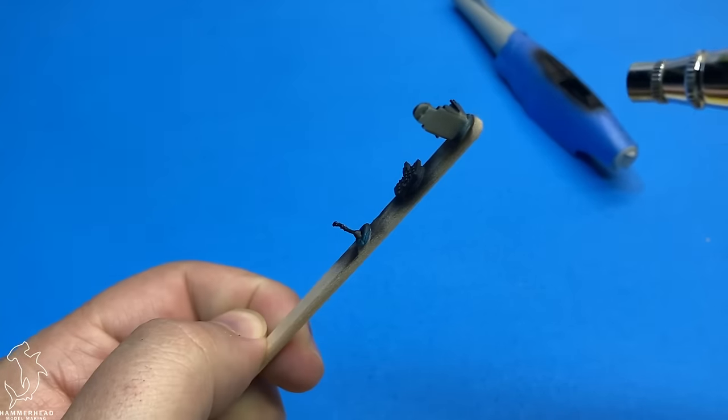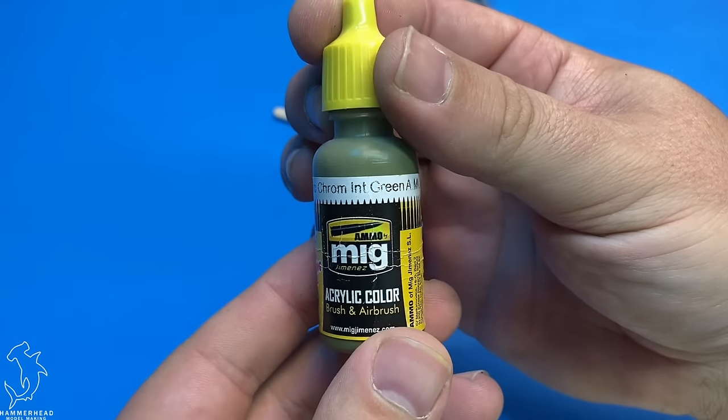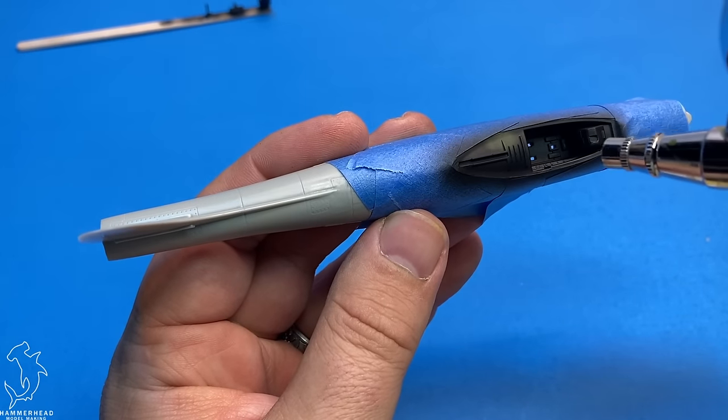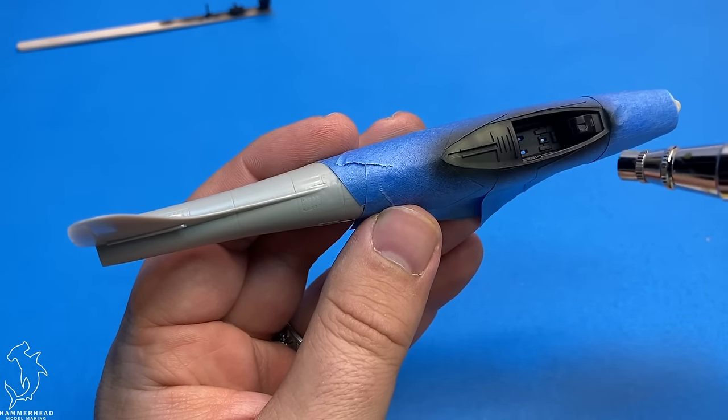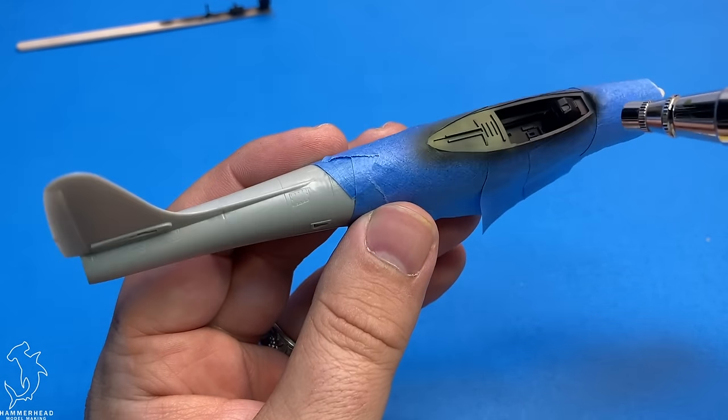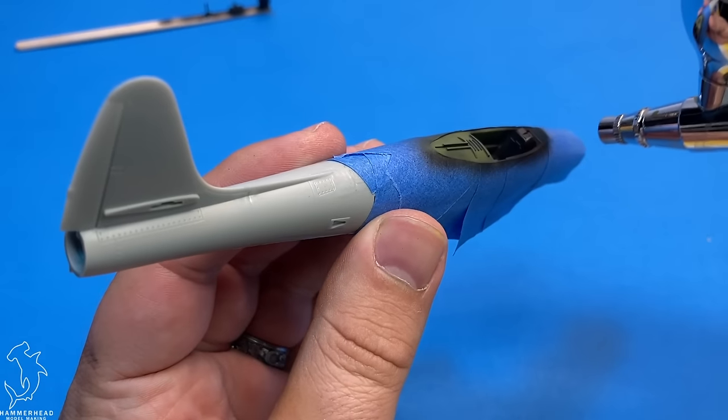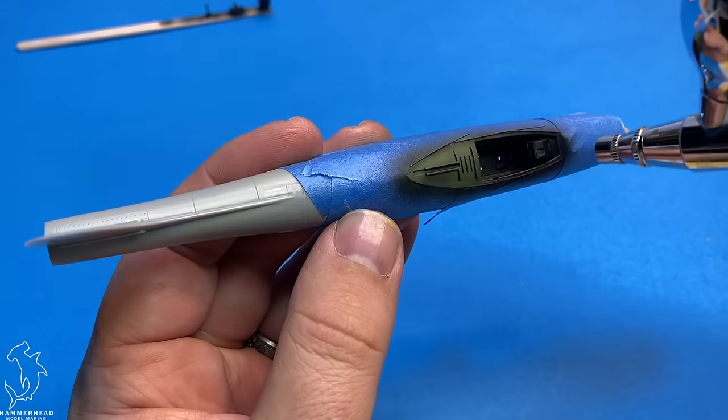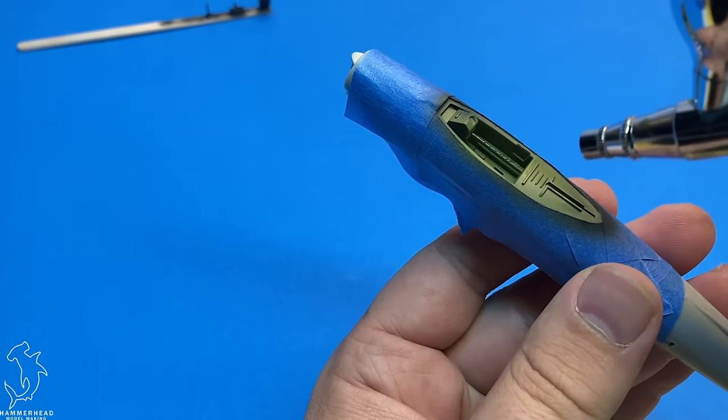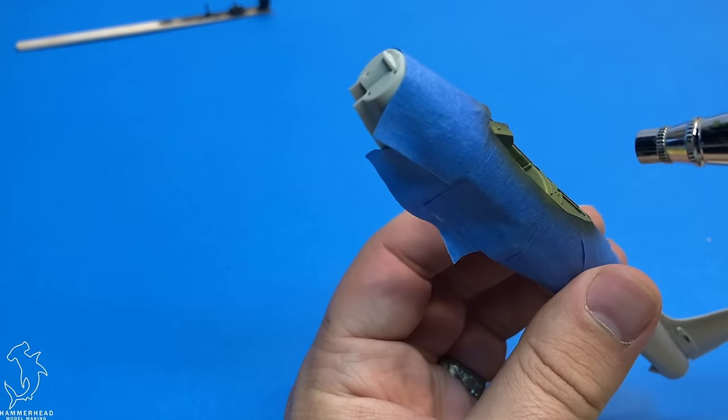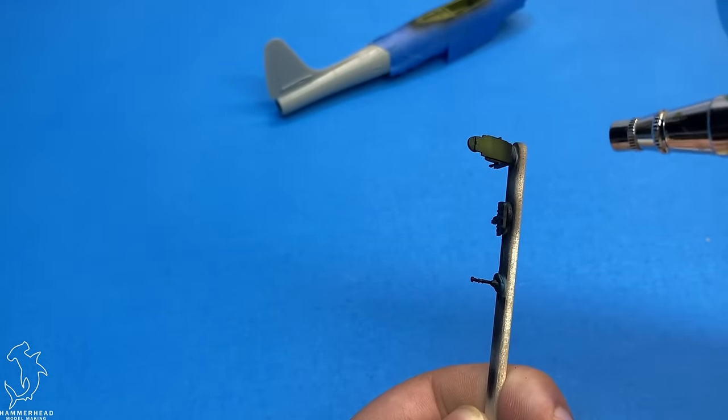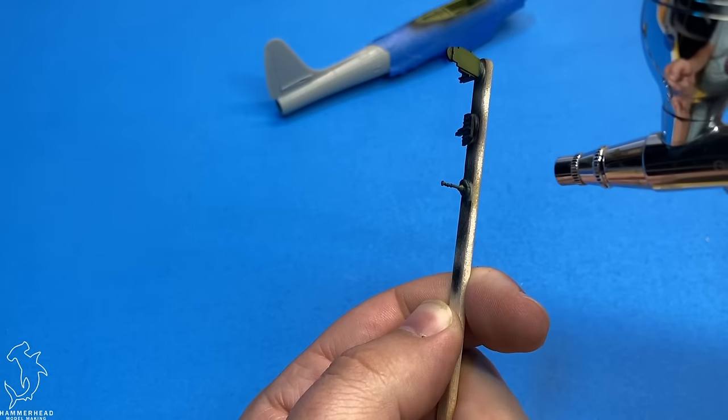But in all fairness to Hobby Boss, it's actually fairly detailed in there. You do get side panels with switches and dials and such, details on the floor where the rudder pedals would be. So I mean, it's not, for how minimal parts it is, it's not terrible. So here I'm just painting up the interior green color. You'll notice that I have masked off around the canopy. This is just to avoid overspray on the fuselage, since I am planning on doing this as a natural metal finish.